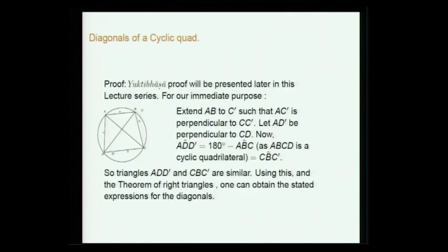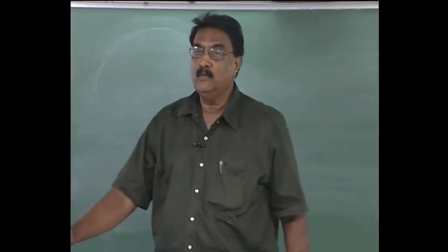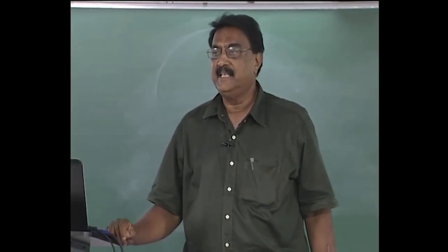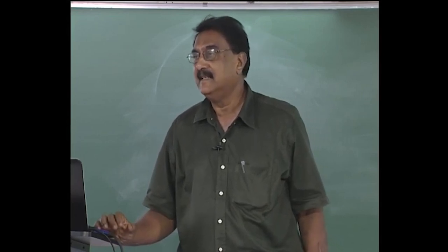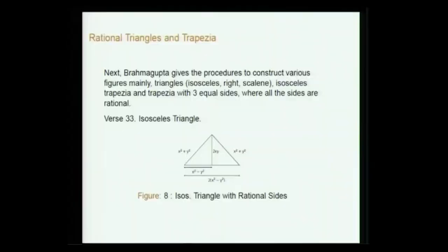That is a very important result due to Brahmagupta. Now we go to rational triangles and trapezia. In Indian mathematics there is some importance given to constructing triangles, quadrilaterals, and various figures where all the sides are rational. For instance, for an isosceles triangle he gives the following construction: take x and y to be rational, the base is 2(x²−y²), the two equal sides are x²+y², and the perpendicular is 2xy — so it is wholly rational.